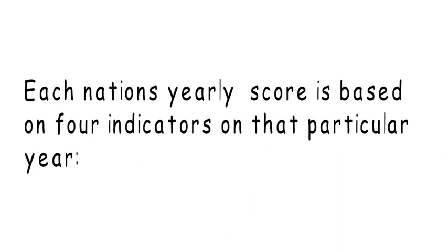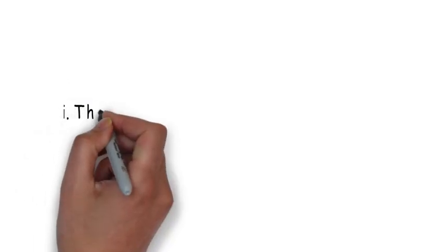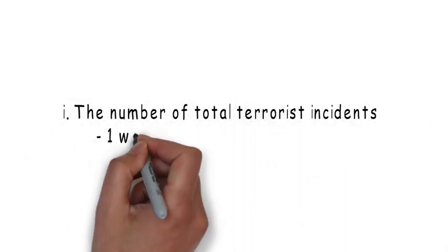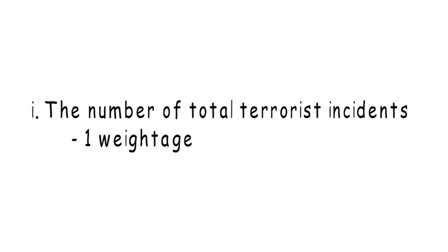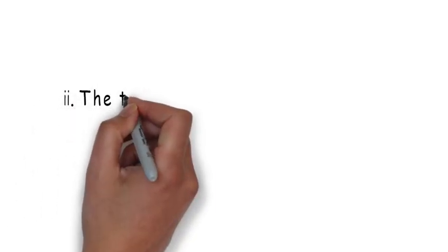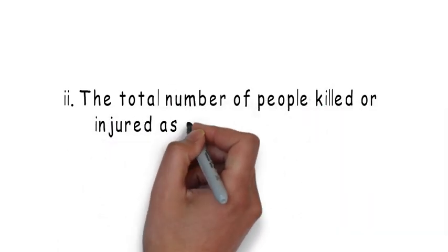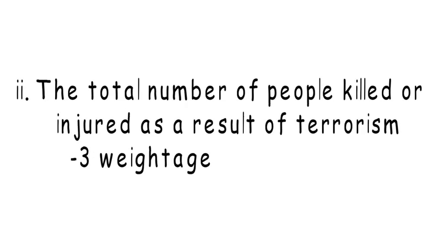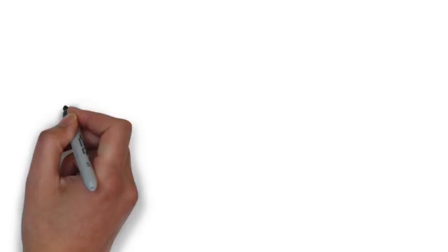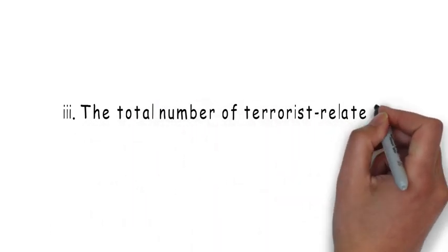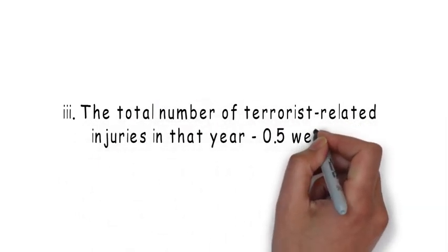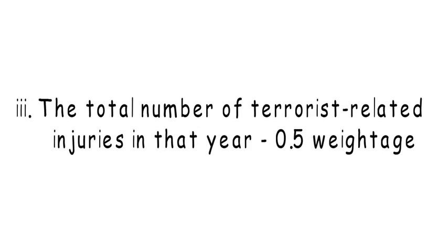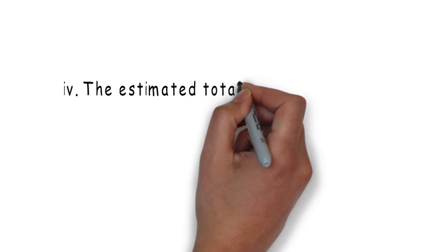Each nation's yearly score is based on four indicators for that particular year. One: the number of total terrorist incidents, given one weightage. Two: the total number of people killed or injured as a result of terrorism, given the highest weightage of 3. Three: the total number of terrorist-related injuries in that year, given 0.5 weightage. Four: the estimated total property damage caused by terrorist incidents, given 0 to 3 weightage based on severity.